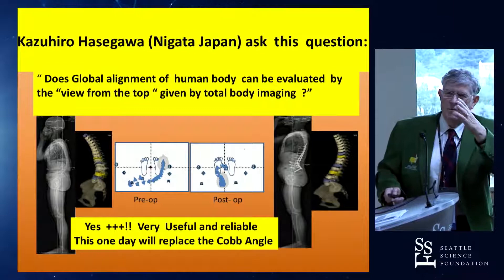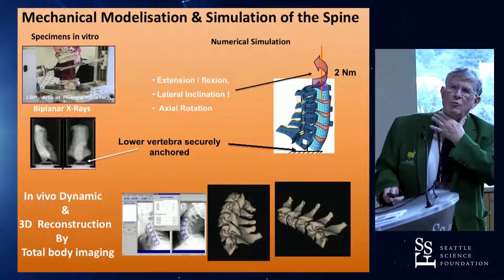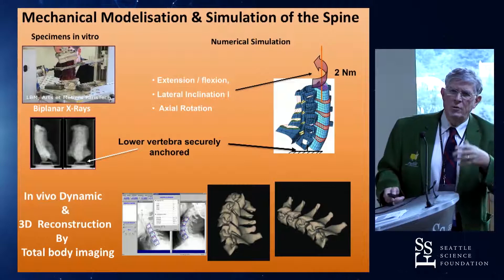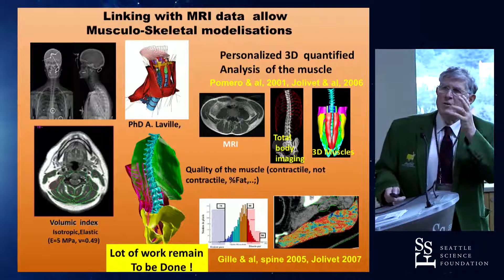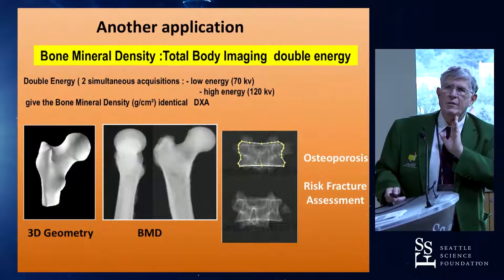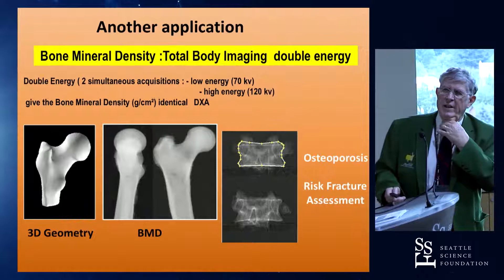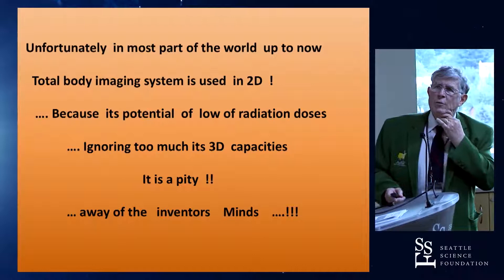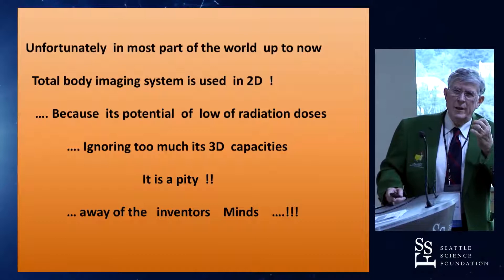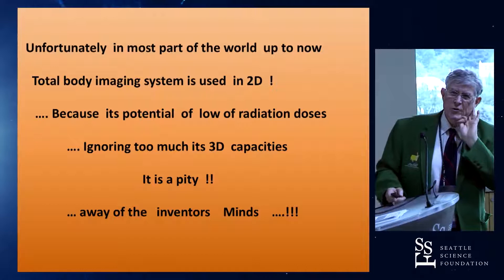With this device, you can do numerical modernization, in vivo dynamic reconstruction, and measure when you link with MRI the work coming on the muscle — you can mix everything in the MRI. If you use double energy — two simultaneous acquisitions with different energy — you can measure DEXA without any difficulty. Unfortunately, in most parts of the world up to now, the total body imaging system is used only in 2D. All the potential of low radiation dose and the 3D capacity is being ignored — for me, it's a pity, and very far from the inventor's minds of this system.